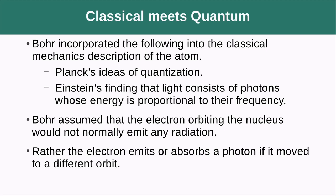Rather, the electron emits or absorbs a photon if moved to a different orbit. So basically he's saying that electrons have set orbits and when they move between them, this is accompanied by the absorption or emission of a photon.